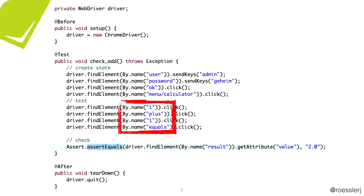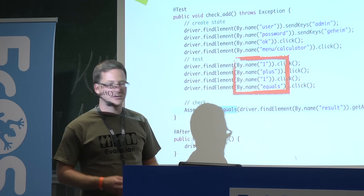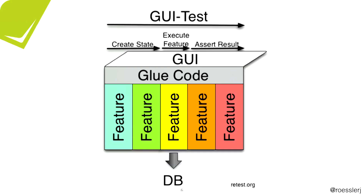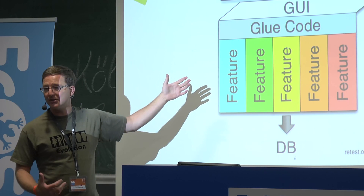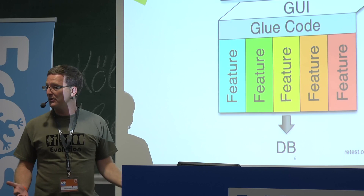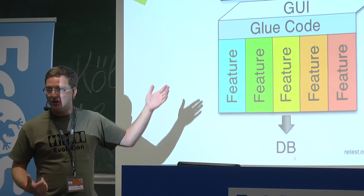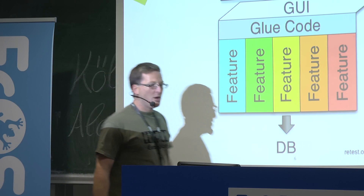On the GUI, your test has the feature you want to test in the middle, but you need to log in first. If the login doesn't work, you can't test your feature. You need to execute the menu — if the menu doesn't work, you can't test your feature. The code you want to test is sandwiched between the rest of the application. If the login changes or the menu changes, you need to adapt your test, even though your test has nothing to do with the login.